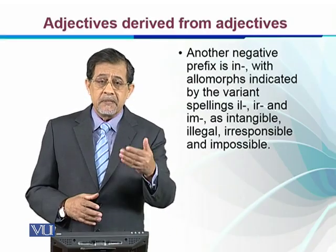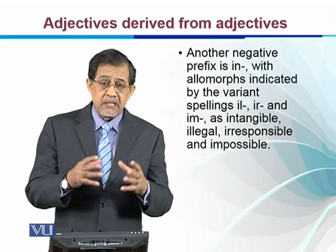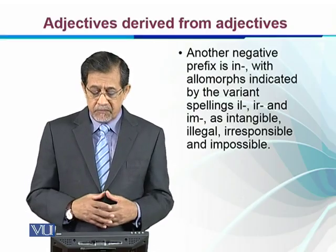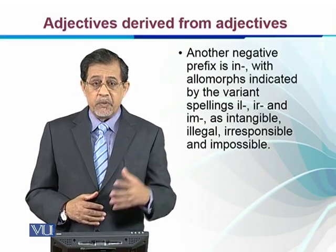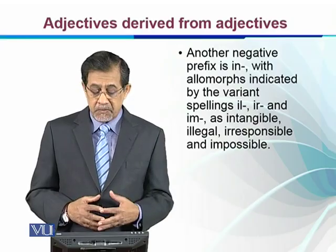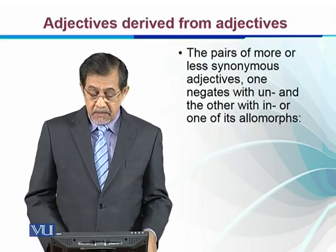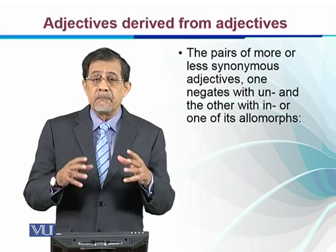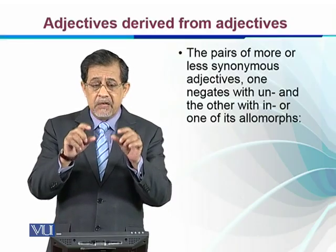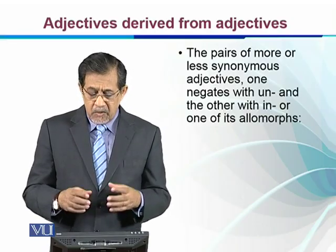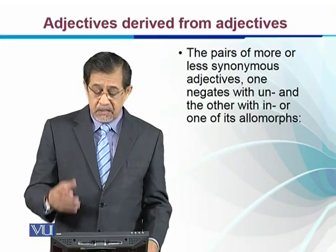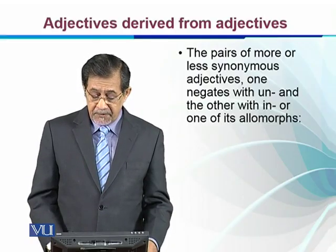Another negative prefix is in-, and it has certain variation depending on the sound it is attached to. We can have spelling variants like ill-, ir-, im-: for example, intangible, illegal, irresponsible, impossible. Pairs of more or less synonymous adjectives — adjectives with similar meanings — one negates with un- and the other negates with in-.